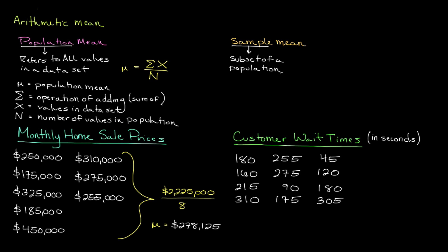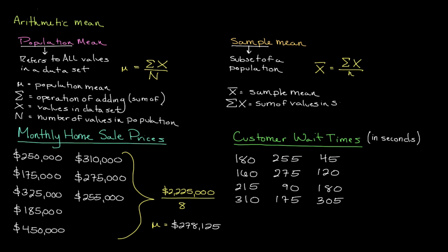To calculate the sample mean, we divide the sum of the values in our sample, which is expressed by sigma x, by the number of values in our sample, which is expressed by n. You'll notice that although the variables have changed, the procedure for calculating a population and sample mean is the same.